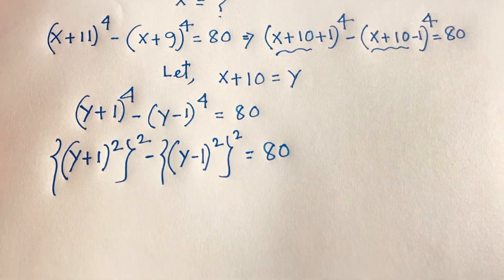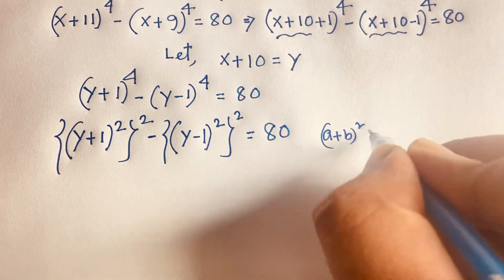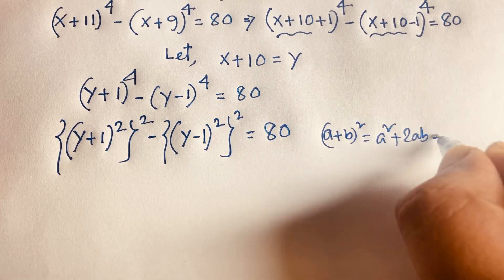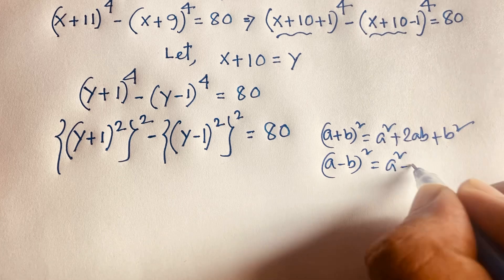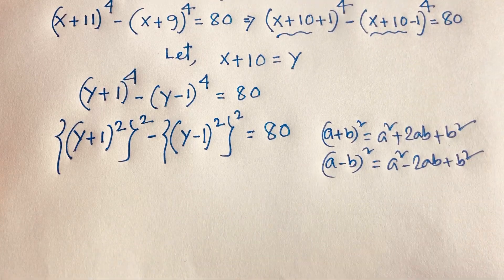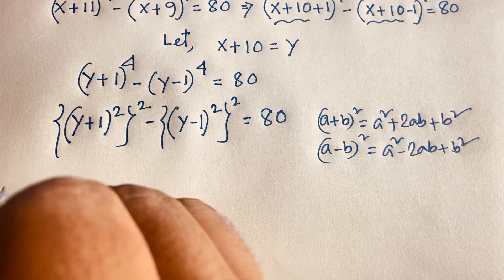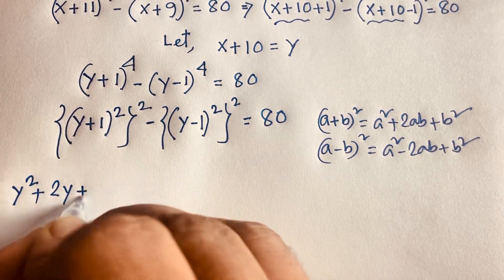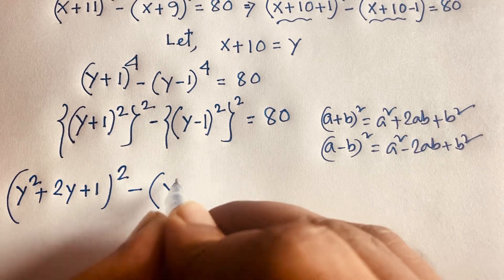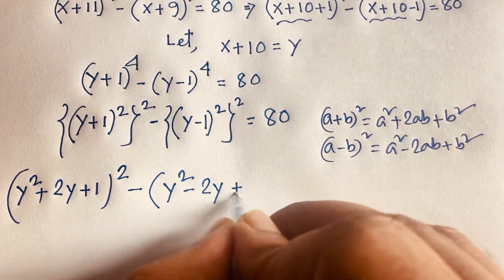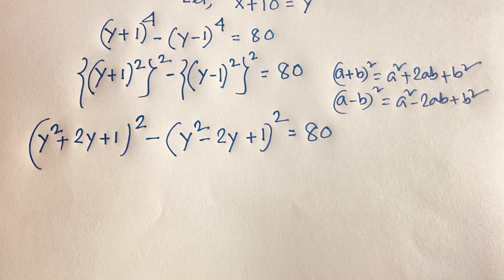We know the algebraic identities: (a + b)² = a² + 2ab + b², and (a − b)² = a² − 2ab + b². Applying these rules, (y + 1)² = y² + 2y + 1, and (y − 1)² = y² − 2y + 1. So the equation becomes (y² + 2y + 1)² − (y² − 2y + 1)² = 80.